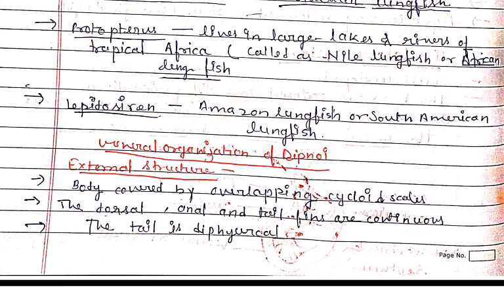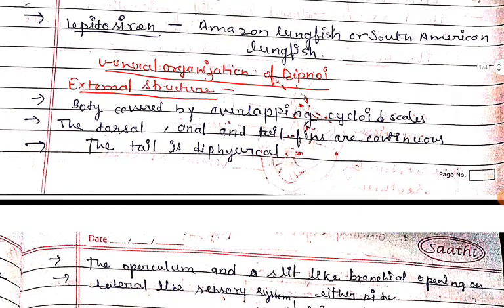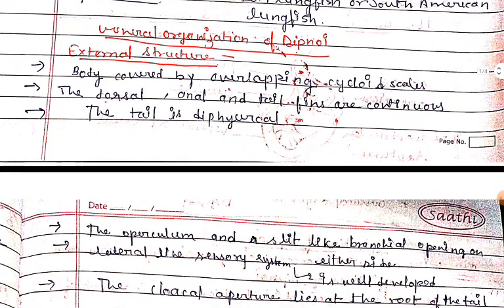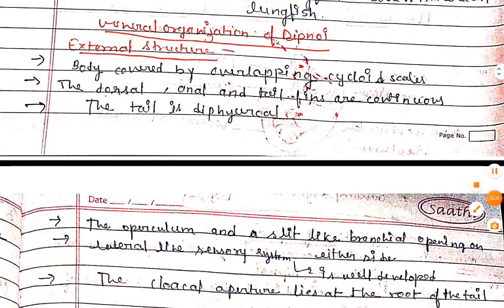Lepidosiren is found in the Amazon River, so it is called the Amazon lung fish or South American lung fish. Next we will talk about the general organization of Dipnoi, starting with external features.